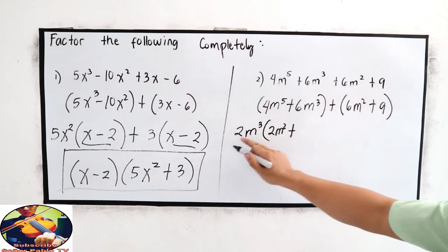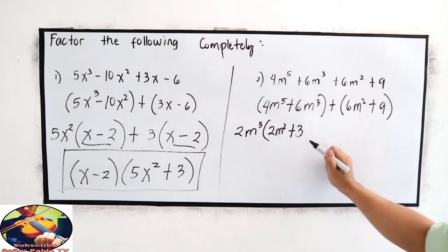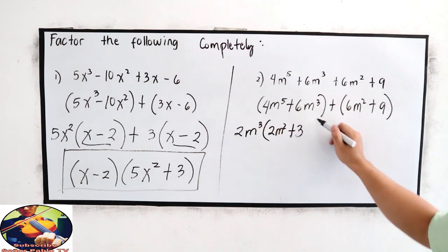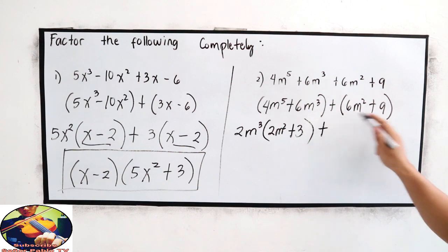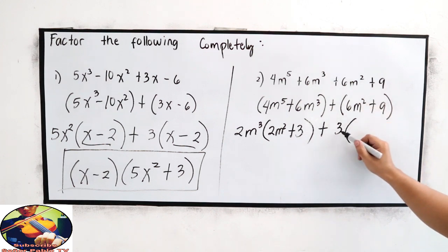Plus, 6 divided by 2, that is 3. m cubed divided by m cubed is 1. Plus 3. Now we have 6m squared divided by 3, that is 2m.